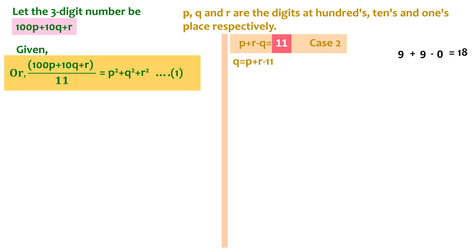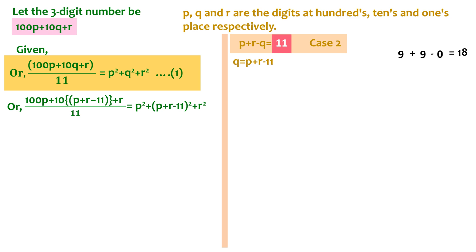We replace this value of q into equation 1 and get (100p + 10(p + r − 11) + r) / 11 = p² + (p + r − 11)² + r². We go on simplifying this equation until we get a reduced form.